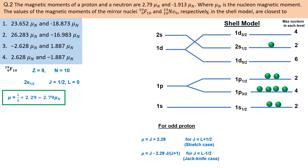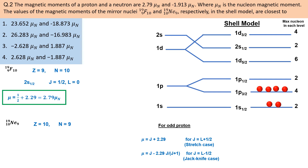Shell model ke kuch limitations hain — fluorine-19 unhi mein se ek hai. Ab baat karte hain fluorine ke mirror nuclei neon ki. Neon-19 mein number of protons 10 aur number of neutrons 9 hain. Chuki neutrons odd number mein hain isliye neutrons ko shell model mein arrange karte hain. Neon mein shell model ko follow karte hue last neutron 1d5/2 level mein arrange hoga, jiske according neon ka angular momentum 5/2 hona chahiye — jo ki correct hai.